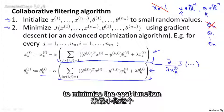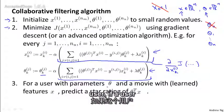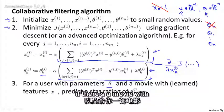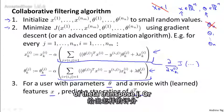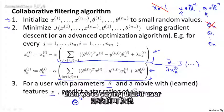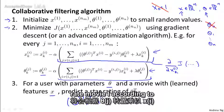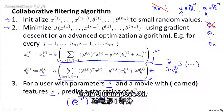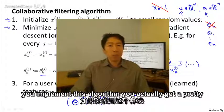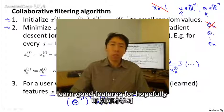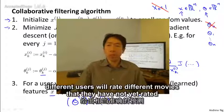We use gradient descent to minimize the cost function J with respect to the features x and the parameters theta. Finally, given a user with parameters theta and a movie with learned features x, we predict that the user will rate that movie as theta_j^T * x_i. So if user j has not yet rated movie i, we predict the rating as theta_j^T * x_i. If you implement this algorithm, you get a decent algorithm that simultaneously learns good features for the movies and good parameters for all the users, giving pretty good predictions for how different users will rate movies they have not yet rated.